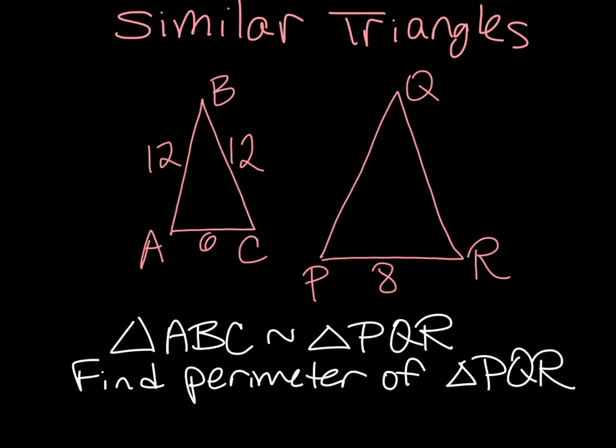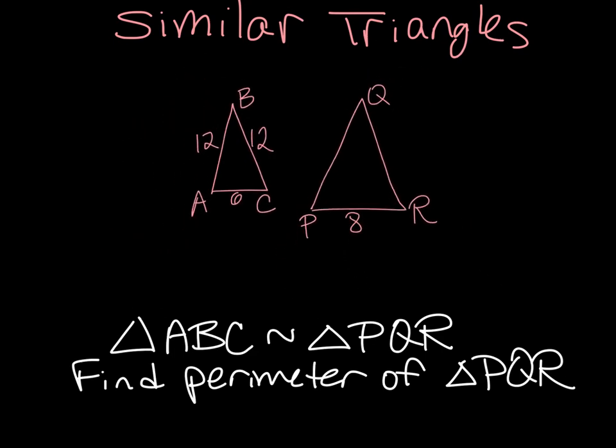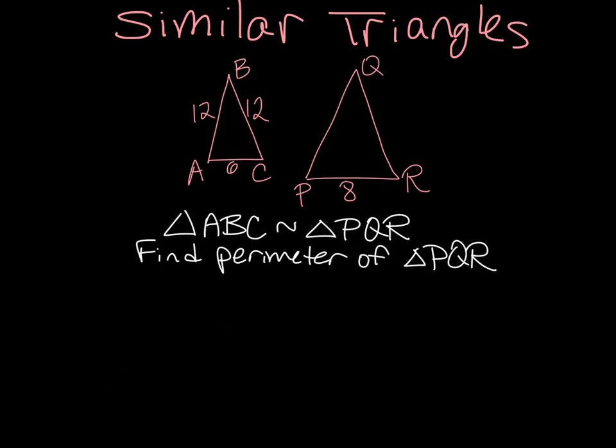We know one side of triangle PQR, PR is 8, but we need to find the other two sides. So what do we know?